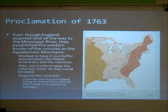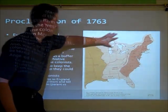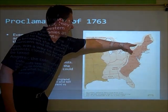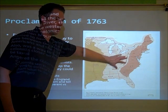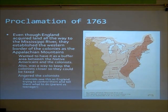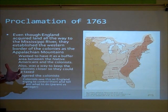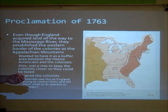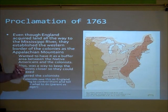The Proclamation of 1763: even though England acquired land all the way to the Mississippi River after the French and Indian War, they made a proclamation saying that the colonists could no longer move past the Appalachian Mountains — all that land they gained was to remain vacant. England said they wanted this as a buffer area between the Native Americans and the colonists. But this was also a way to keep the colonists closer so they could be taxed. This angered the colonists, who saw it as England trying to control them — like a parent telling a teenager what to do.